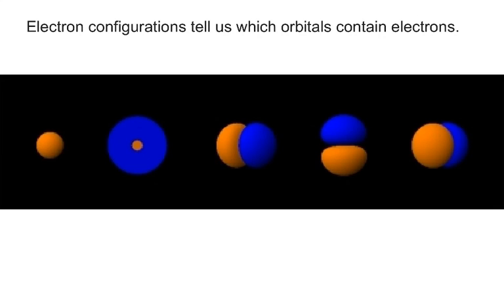These configurations that you're going to be working on, they tell us exactly where electrons are likely to be and which orbitals will have electrons. For example, you might see an electron configuration of 1s2 2s1. That's the electron configuration for the element lithium. What that configuration tells us is that in the 1s orbital, there are 2 electrons.